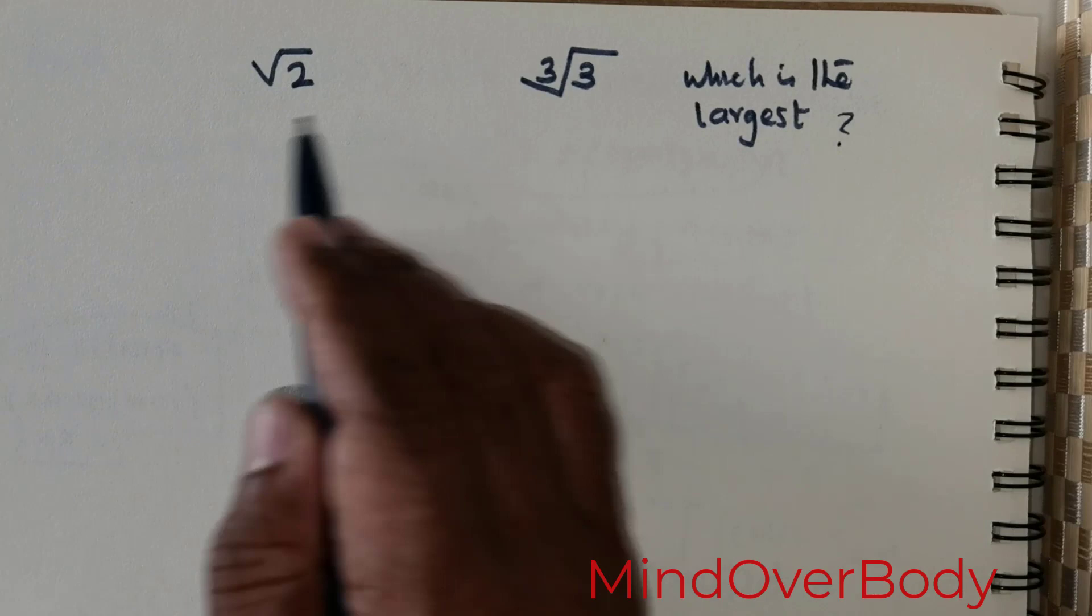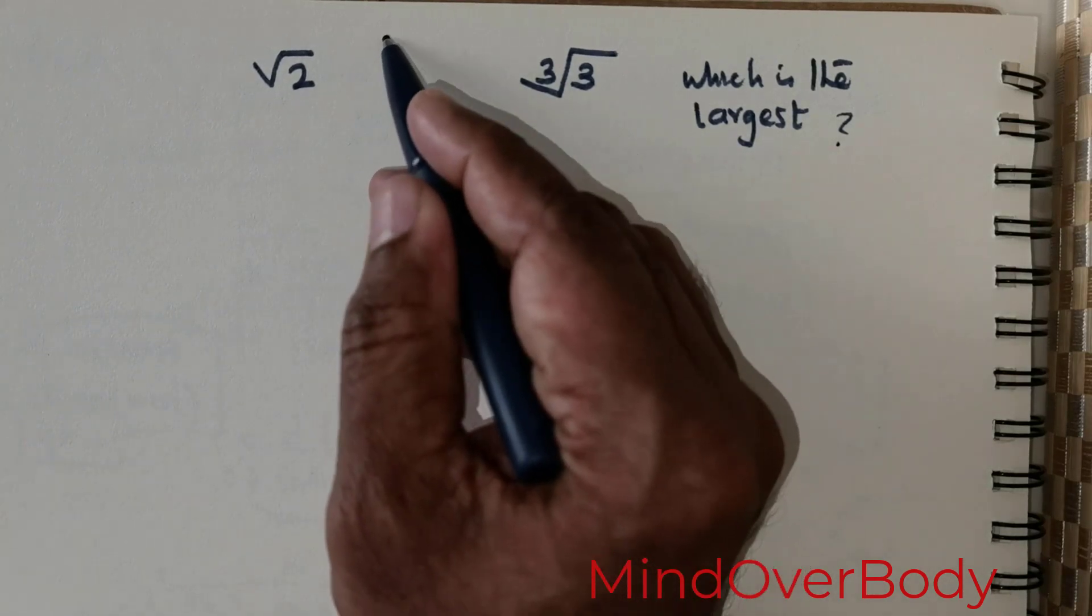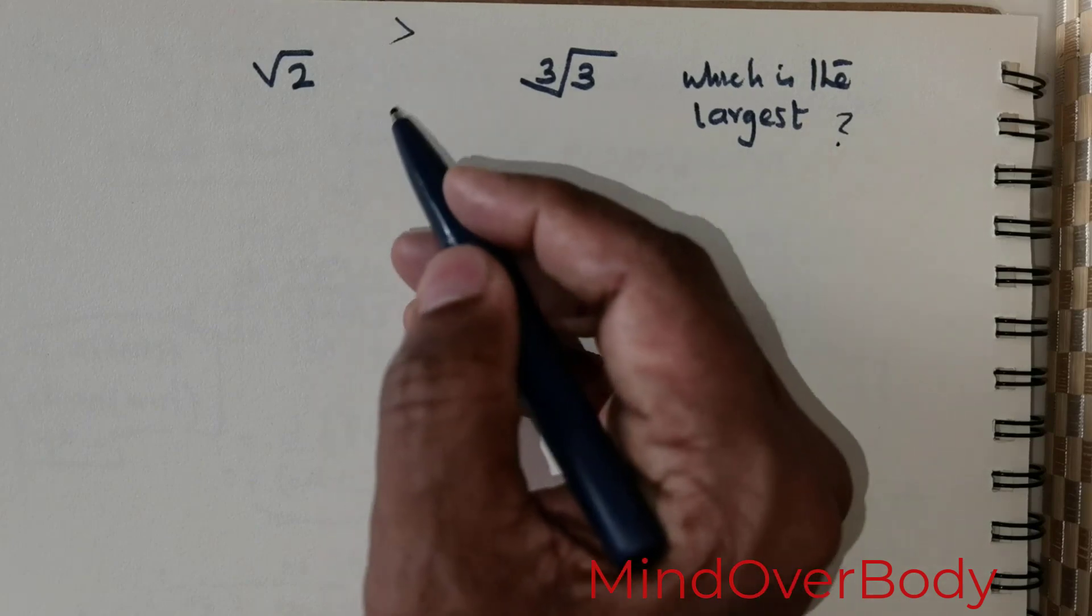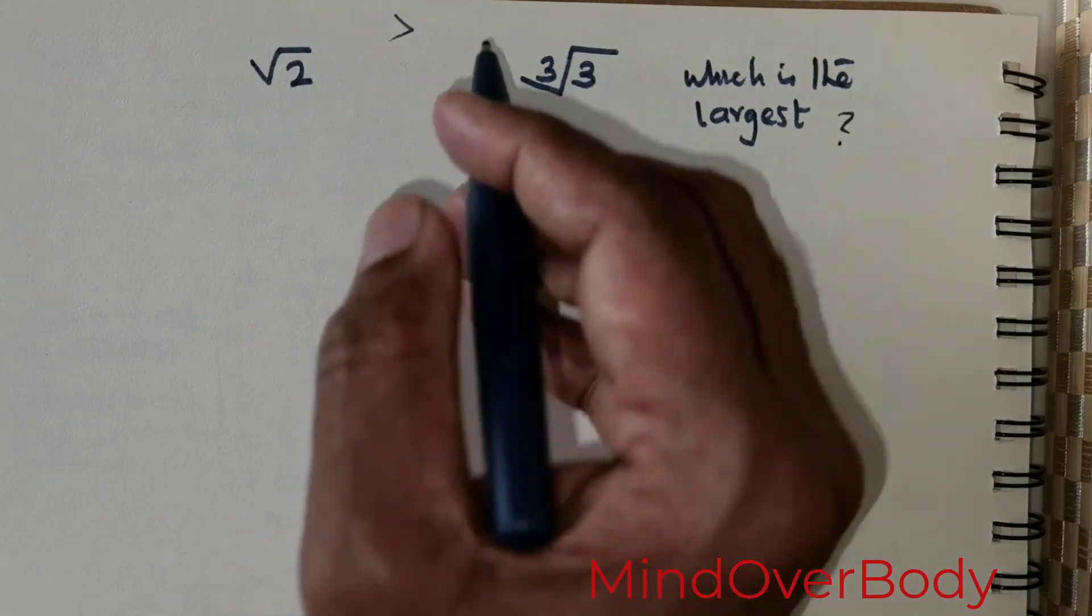So whenever such questions are exposed, the instantaneous response would be to just place the greater sign like this, meaning root 2 is greater, which is incorrect.